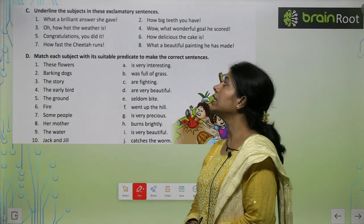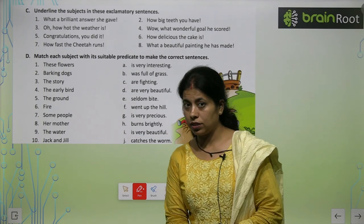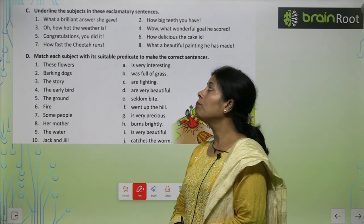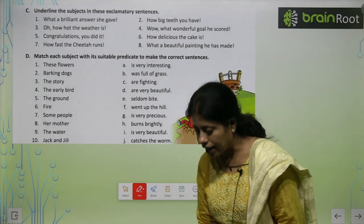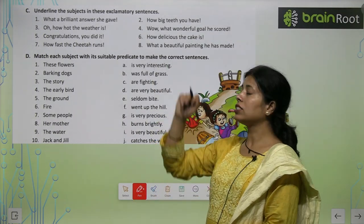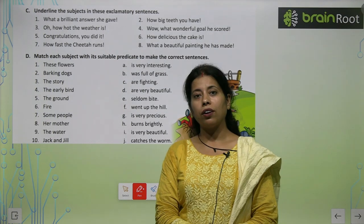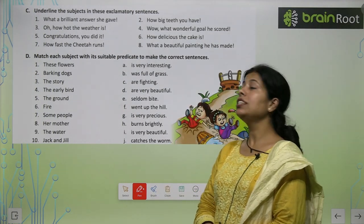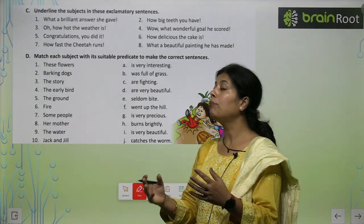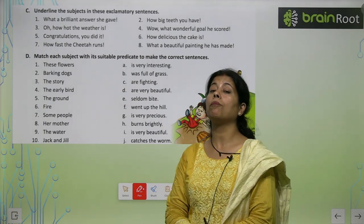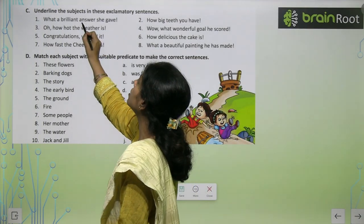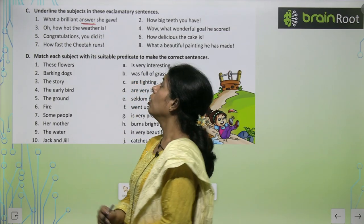Underline the subjects in these exclamatory sentences. Now we have to underline the subject part. What a brilliant answer she gave. Ab aapko aisa lag raha hoga ki yahan pe 'she' subject hai, but you are wrong here. Yahan pe she subject nahi hai. Yahan pe baat ho rahi hai 'what a brilliant answer' — yahan pe answer ke baare mein baat ho rahi hai.